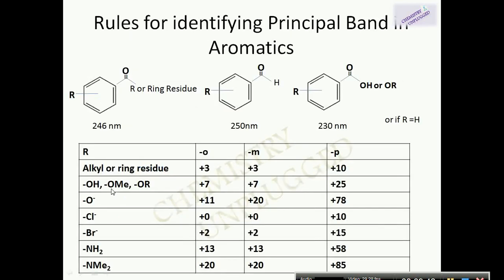Rules for identifying the principal band in aromatics: we have three basic systems. First, when the benzene ring is substituted by a COR or ring residue group, the base value of lambda max is 246nm. Second, when the benzene ring has a CO system with R-CO, the base value is 250nm.